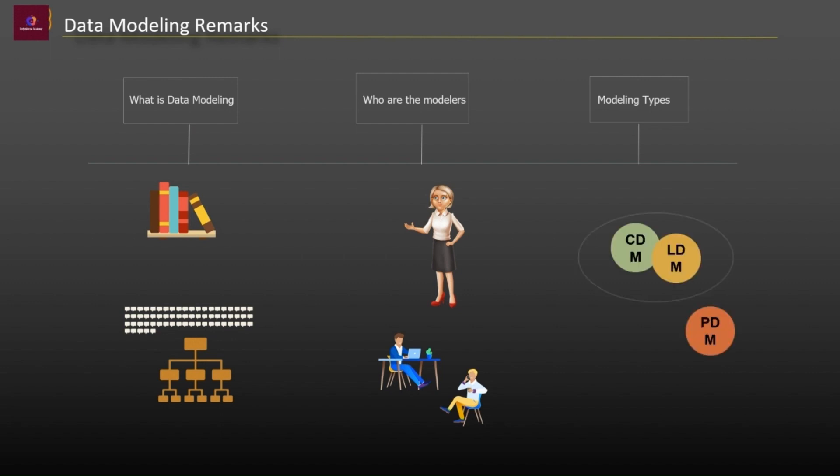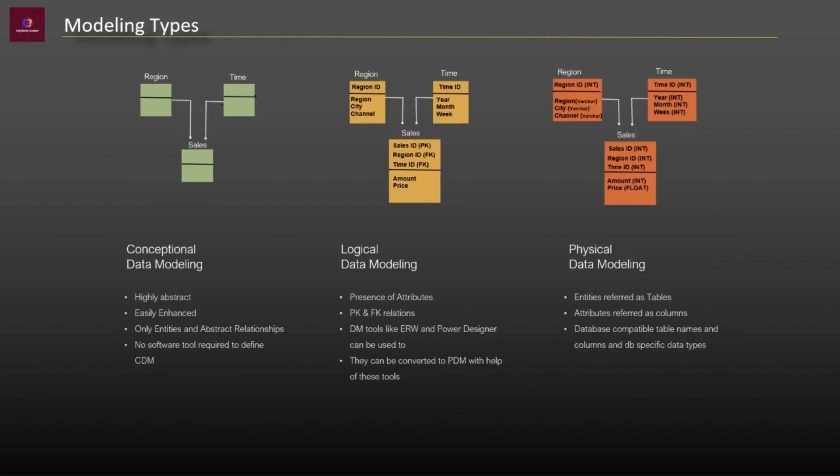What are modeling types? Any design process, database and information system design begins at a high level of abstraction and becomes increasingly more concrete and specific. Data models can generally be divided into three categories which vary according to their degree of abstraction. The process will start with the conceptual model, progress to logical model and conclude with the physical model.